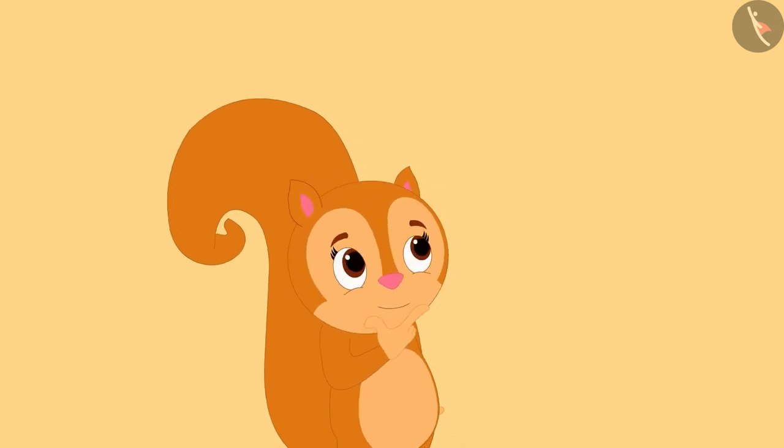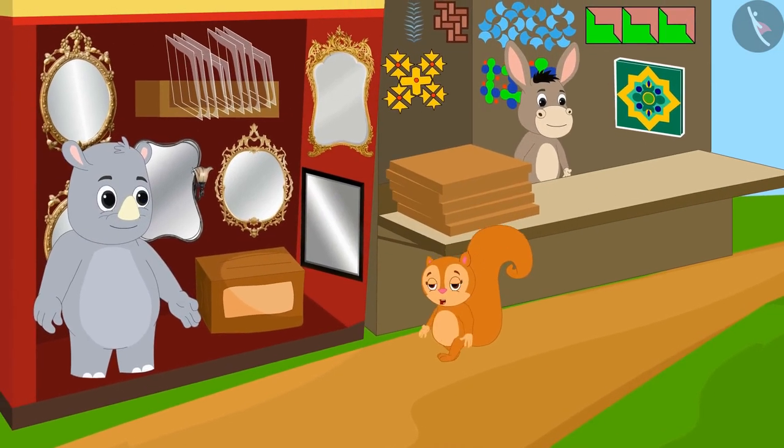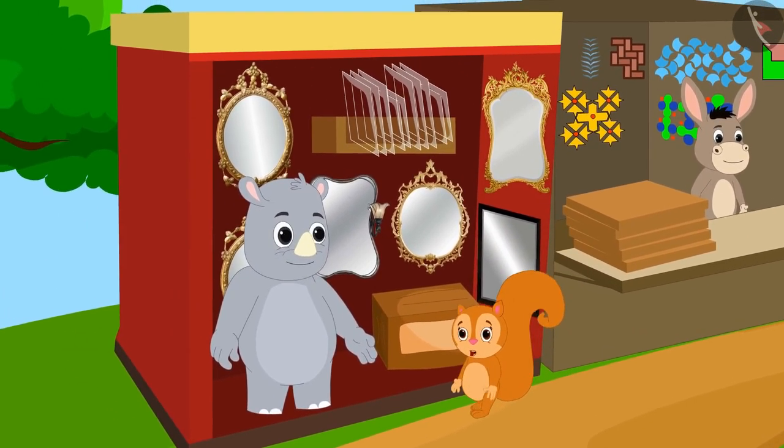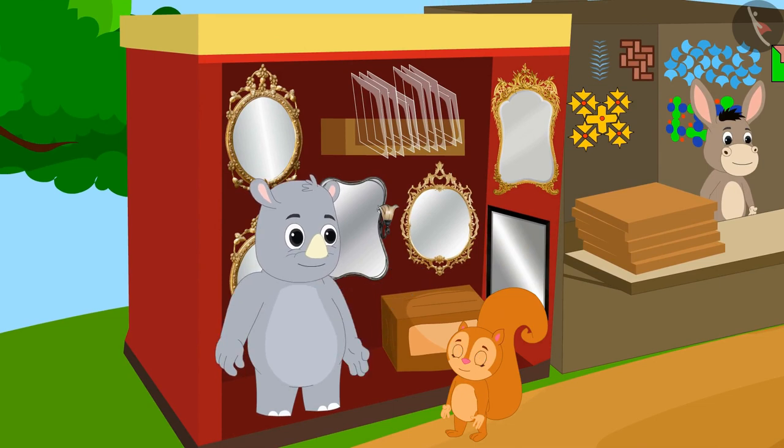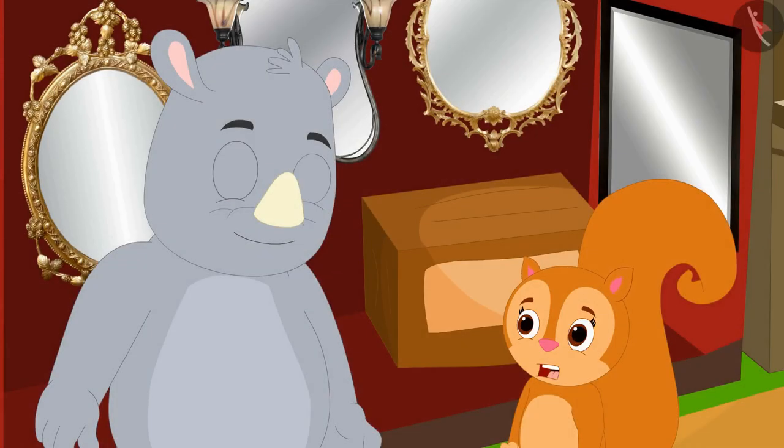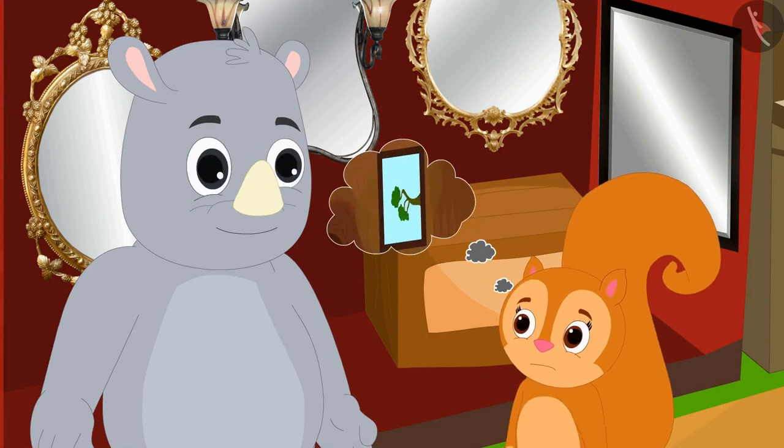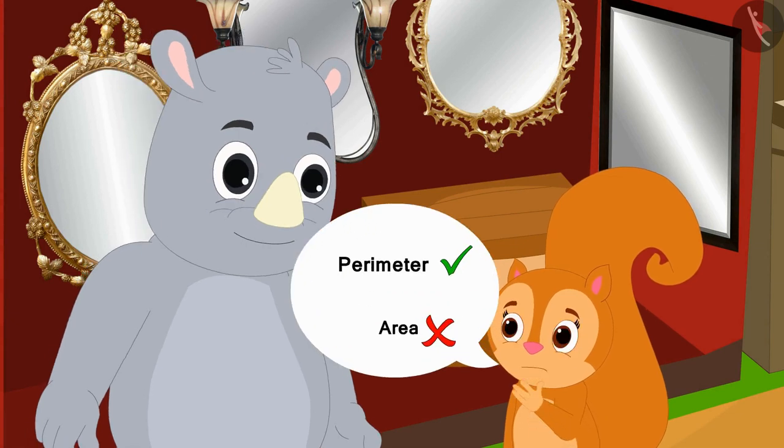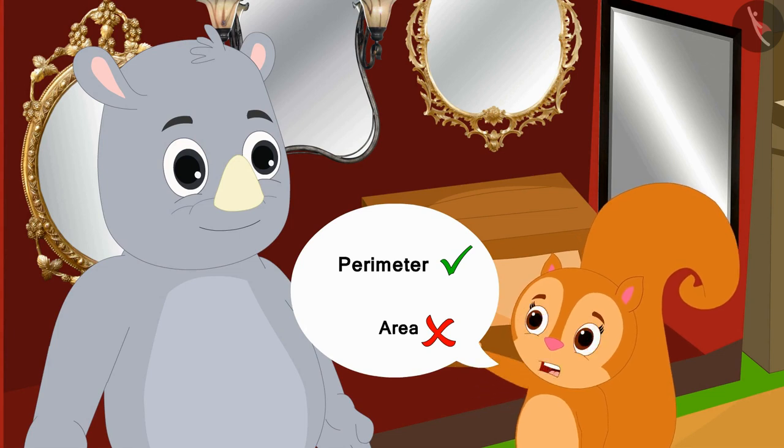While thinking this, Chanda reached Gaggoo's mirror shop. Chanda, why do you look so upset? Gaggoo asked. Gaggoo, I want to buy a glass for my rectangle shaped window. I remember the perimeter of the frame of my window and also the length of the window, but I do not know the area of glass I need for the window.